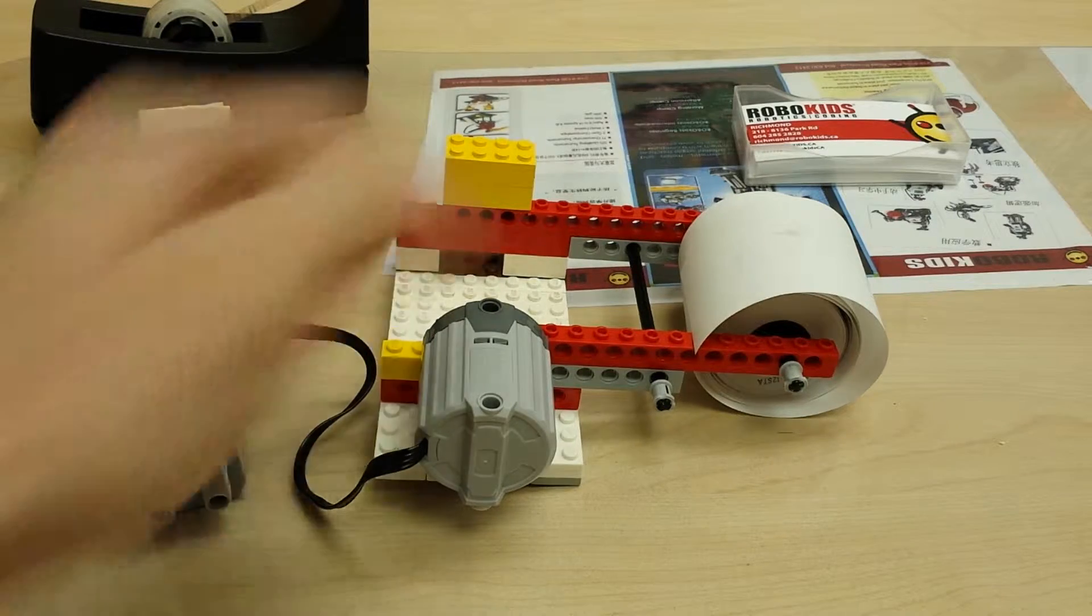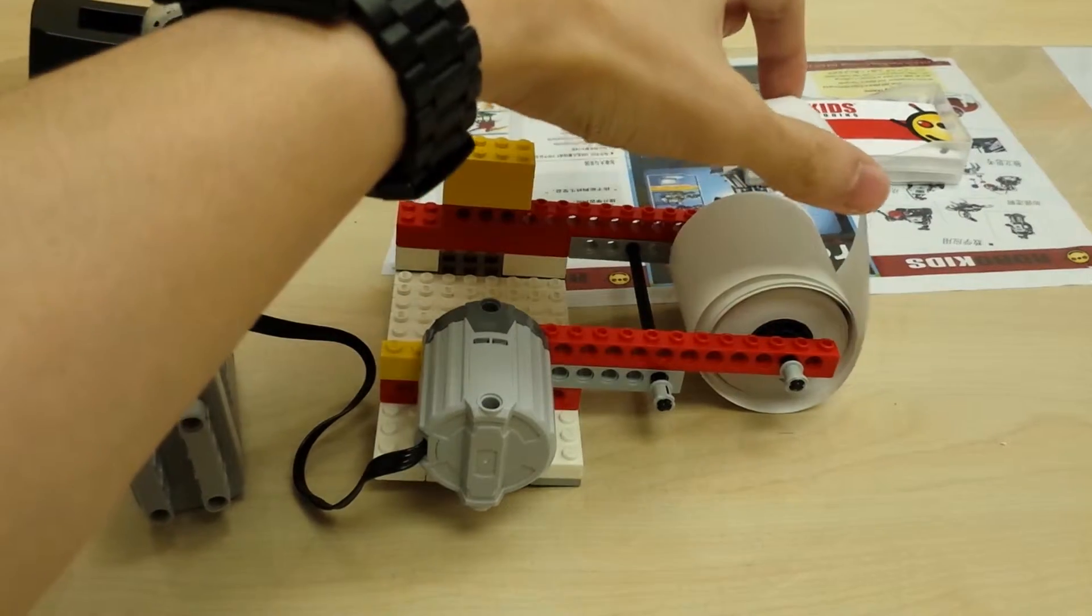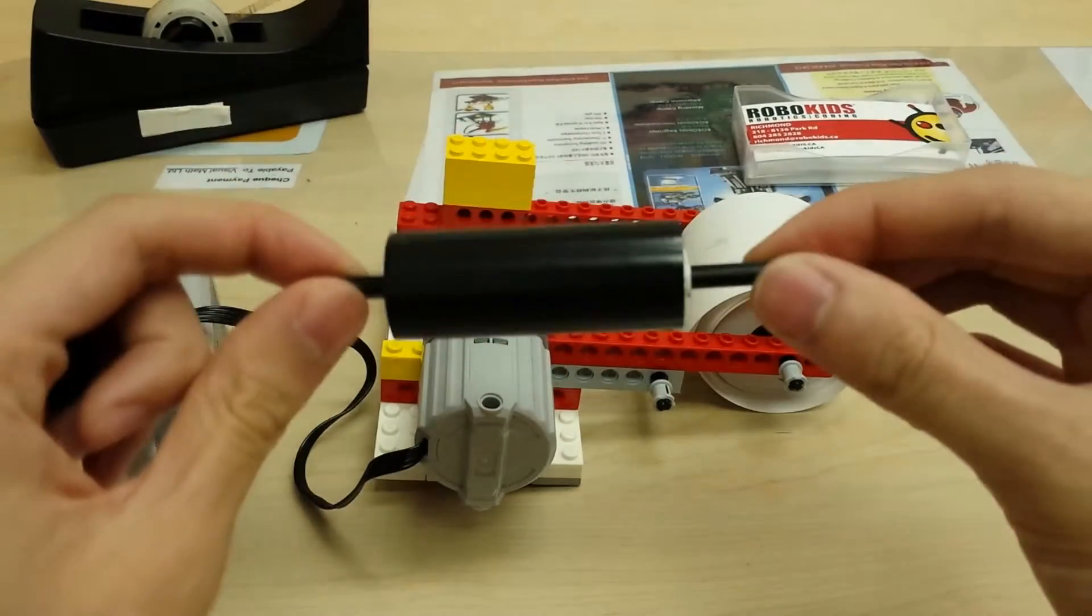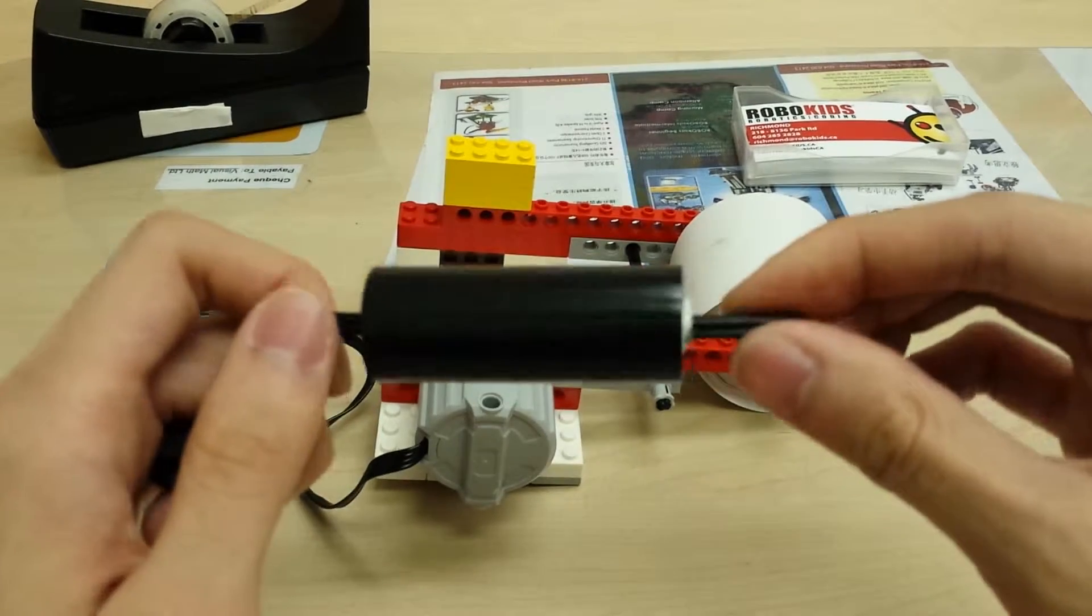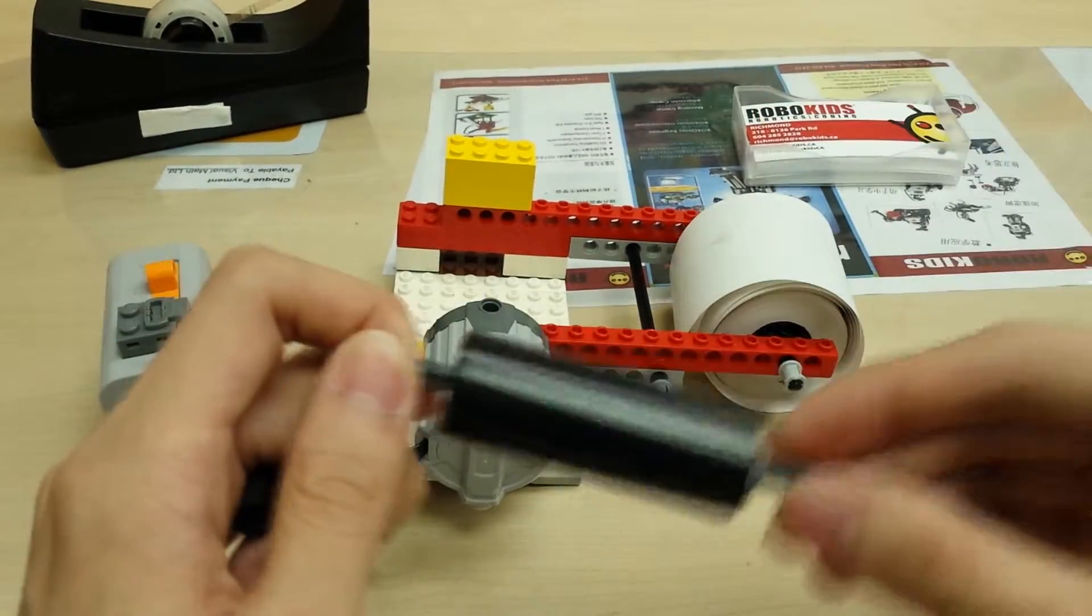So here's our contraption. We're going to try to make this big roll of paper and transfer it to a smaller cartridge right here. This is for our receipt machine. The big roll is too big for the machine and we have to transfer it over.